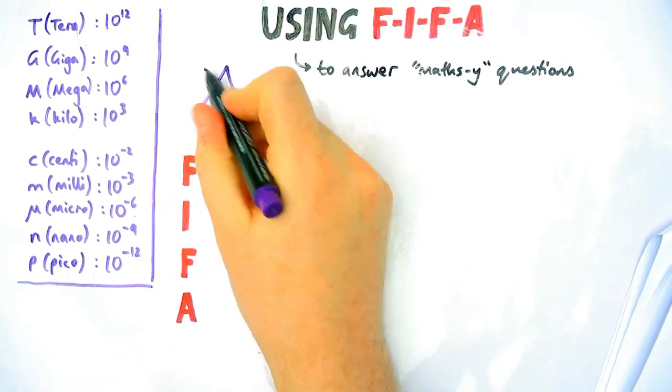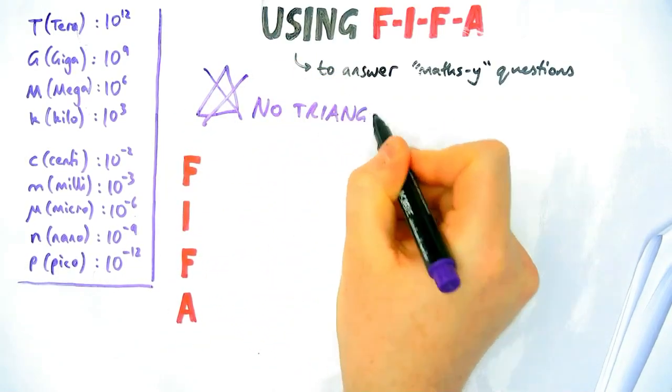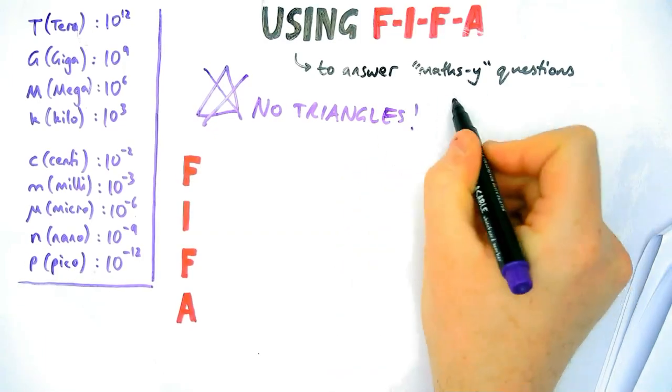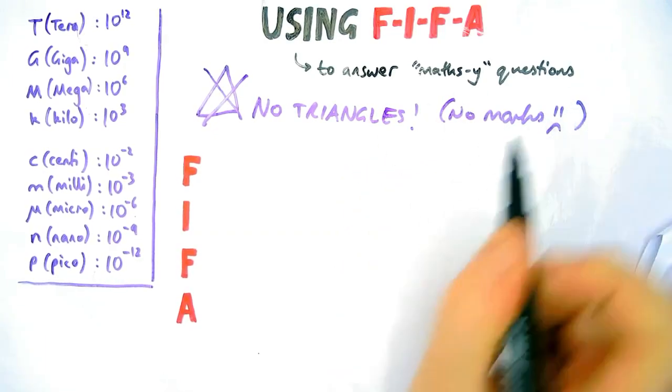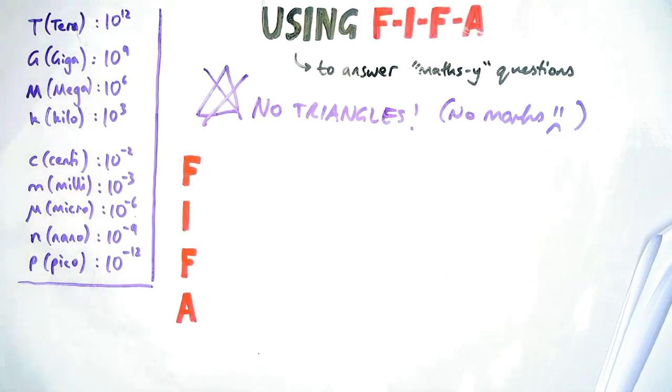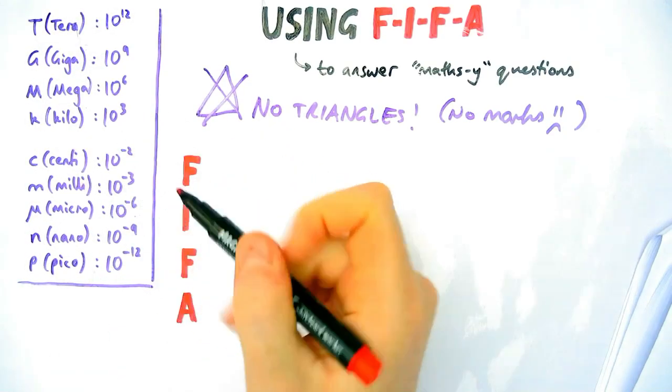If you're still using formula triangles to help you solve physics equations, you need to stop. There's no reason to use them. They don't get you marks, and there's lots of equations in physics which you cannot make a formula triangle out of. My preferred way is by using something called FIFA. Let me show you how it works.